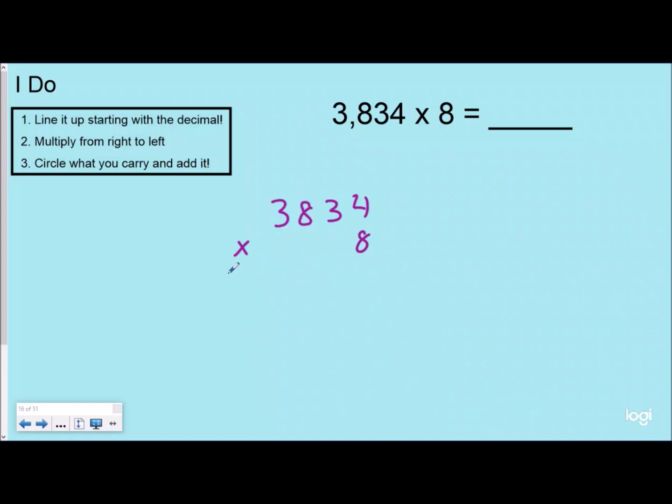So 8 times 4 is 32. I regroup my 3 over my tens place, which you remember was really 3 groups of 10. Eight times 3 is 24 plus 3 is 27, so I'm going to regroup my 2 over my hundreds place.